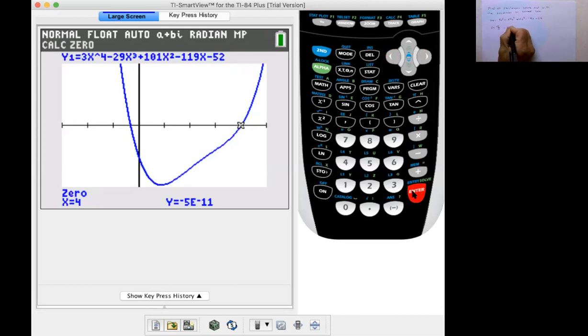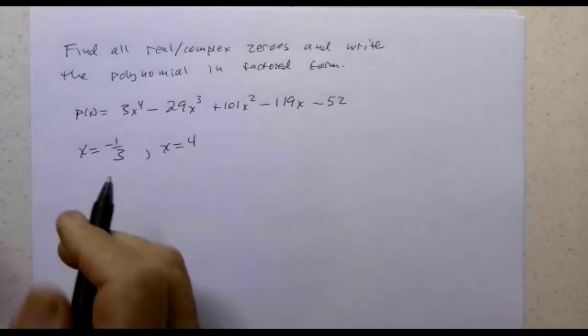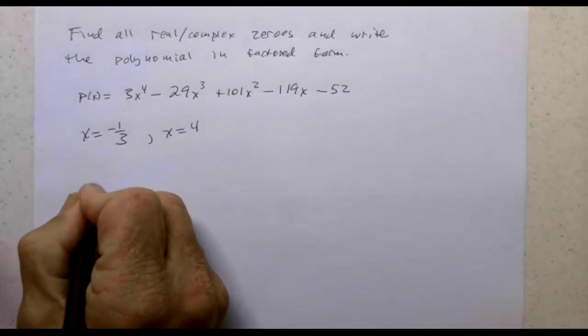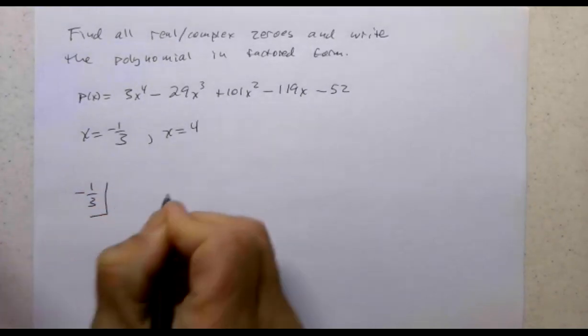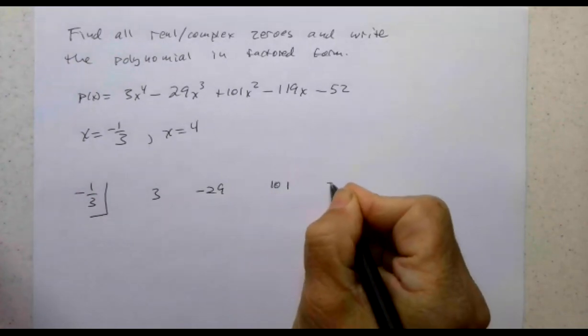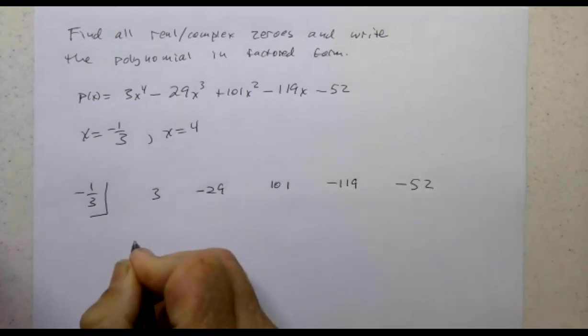So from the calculator, rather than doing a whole bunch of synthetic division, I was able to find two of the zeros, but let's see if I'm right. I'm going to do synthetic division to see if the remainder really is zero. So we have 3x^4, -29, 101, -119, -52.